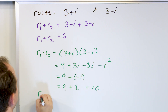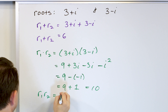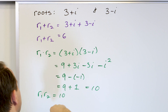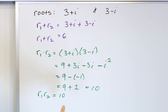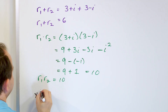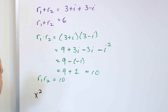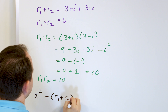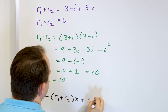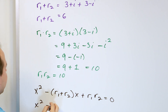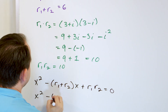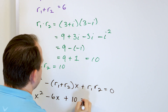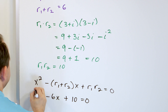Now we know the sum and product of the roots, so stick them into the formula: x squared minus (r1 plus r2)·x plus r1·r2 equals zero. The sum of the roots came out to be 6, so it's 6x. The product of the roots came out to be 10.